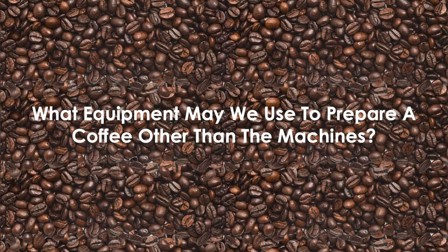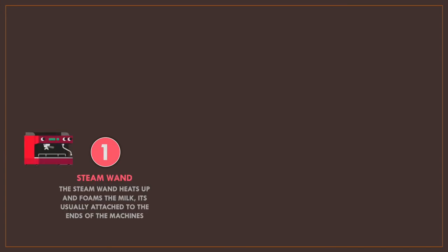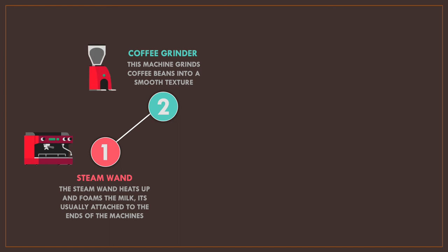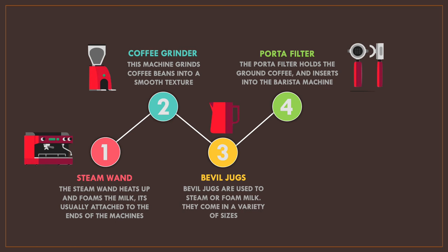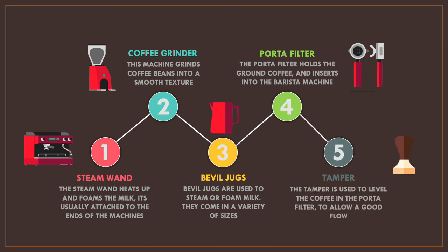What equipment may we use to prepare our coffee, other than the machines? Steam wand: the steam wand heats up and foams the milk, and is usually attached to the end of the machine. Coffee grinder: this grinds coffee beans into a smooth texture for the machine. Bevel jugs: used to steam or foam milk and come in a variety of sizes. Porter filter: holds the ground coffee and inserts into the barista machine. Tamper: the tamper is used to level the coffee in the porter filter to allow a good flow when inserted into the machine.